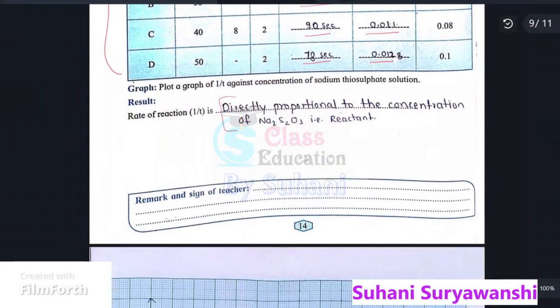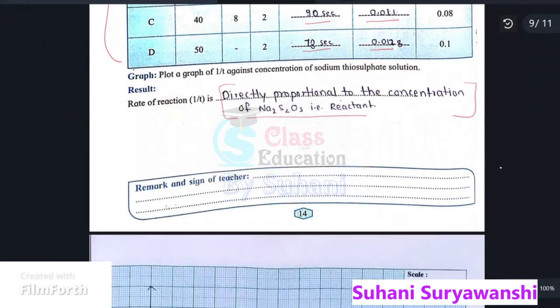So here, rate of reaction, that is 1 by t, is directly proportional to the concentration of Na2S2O3, that is reactant.